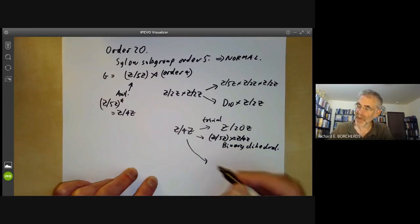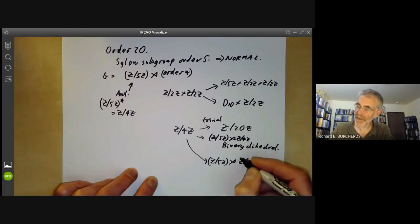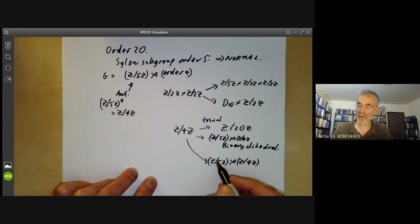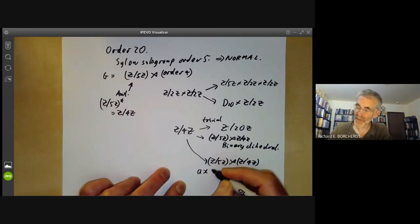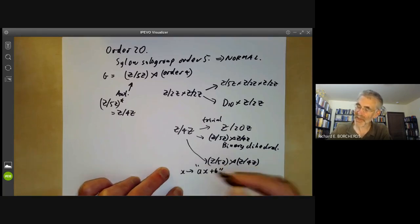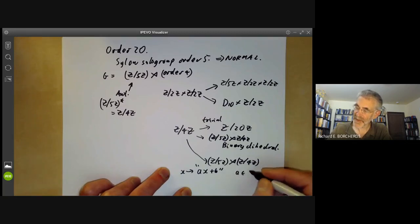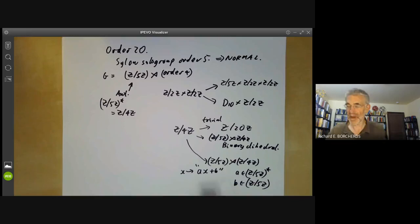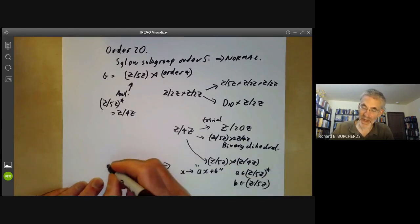So the final example is a group Z/5Z semi-direct product Z/4Z with an element here acting as an order 4 automorphism of this. And this is the so-called ax plus b group. Here it consists of all transformations taking x to ax plus b where a is in Z modulo 5Z* and b is in Z modulo 5Z. So you can think of it as being the group of linear affine transformations of a line over the field with five elements. And this is the one that's going to motivate the rest of the lecture today. This is a Frobenius group.